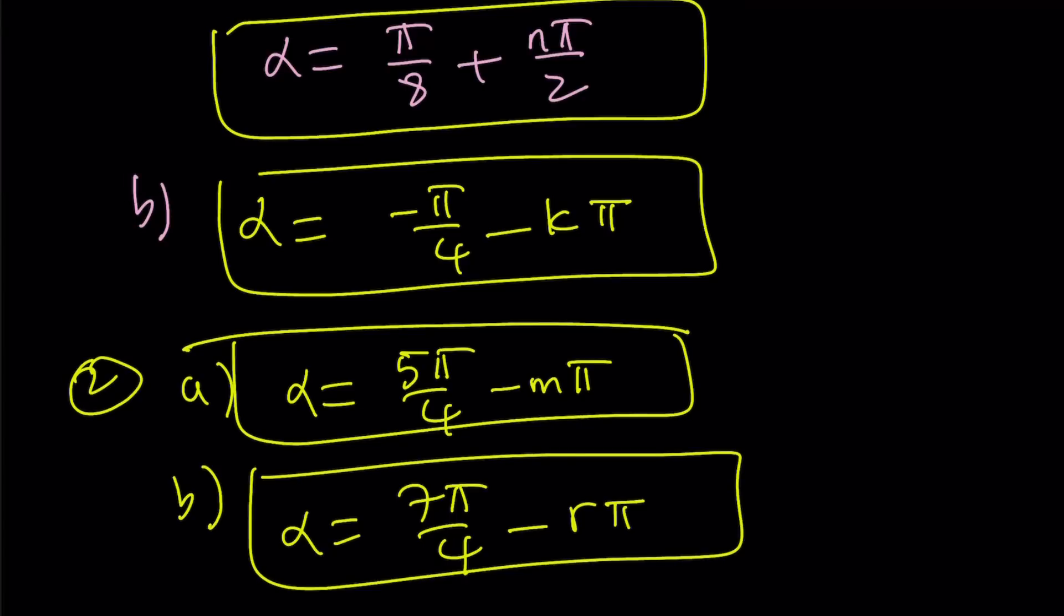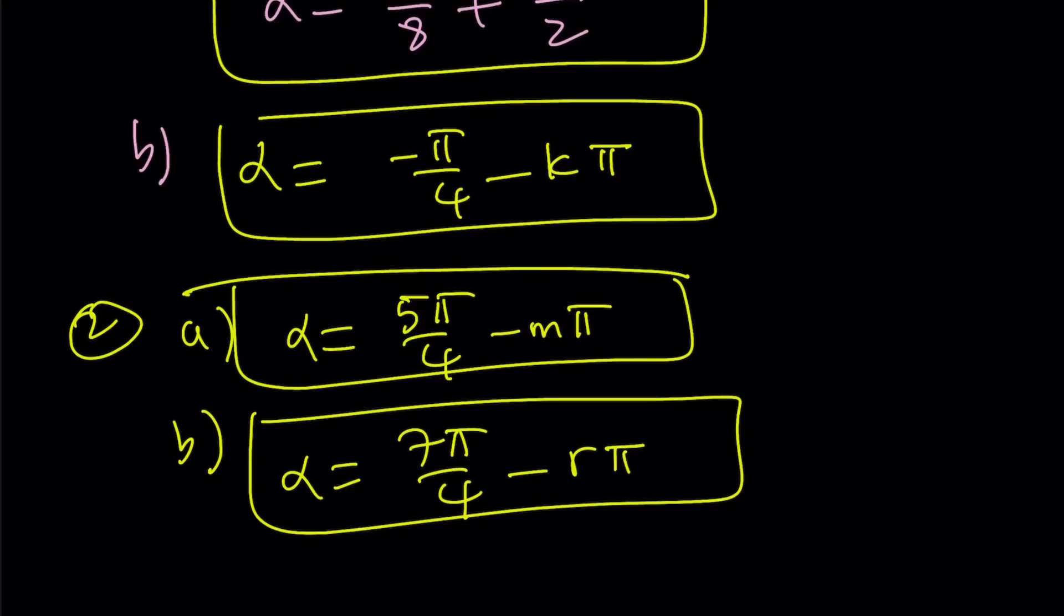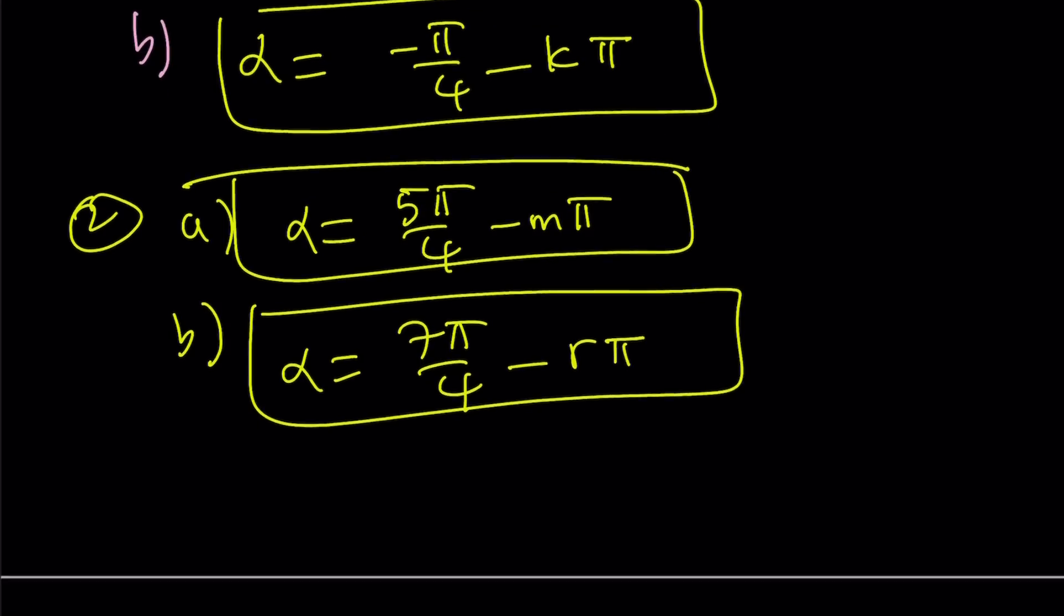you kind of get those four solutions from here. Obviously, with the values of r, m, k, we're going to get more values. But, some of these are going to coincide because we're supposed to have six solutions. Make sense? Okay, great. So, let's see what this is going to give us.